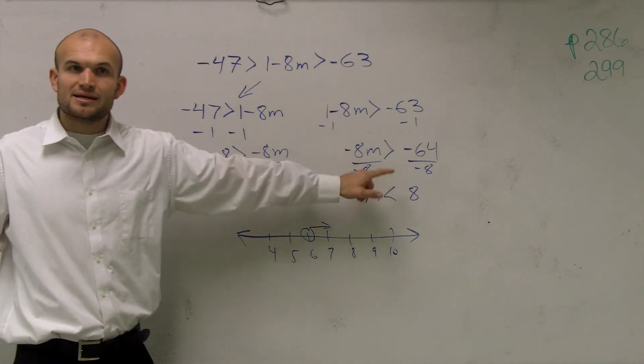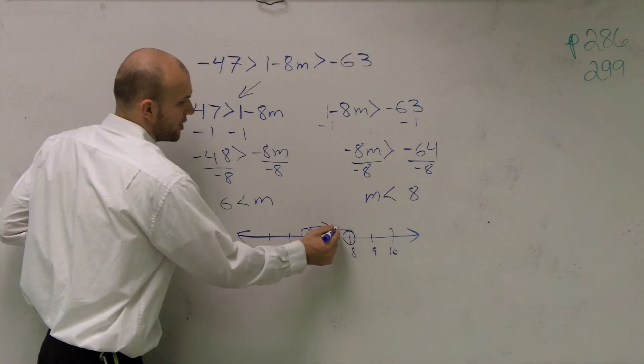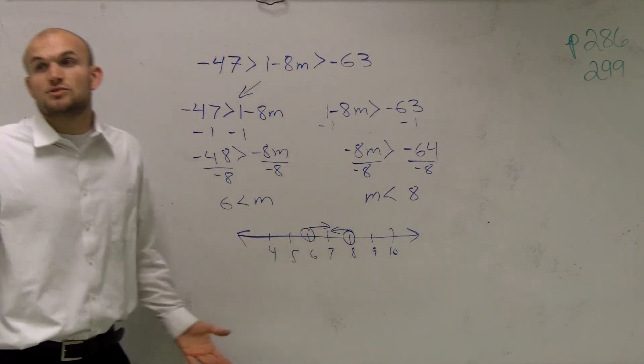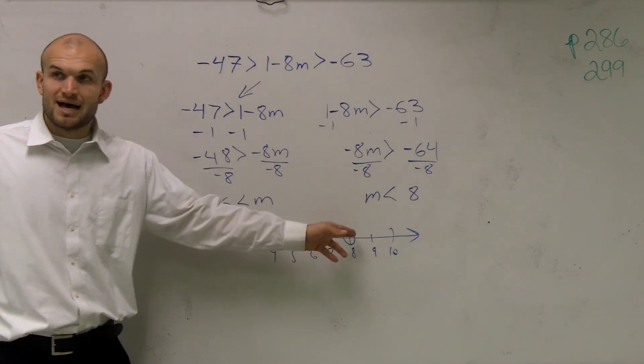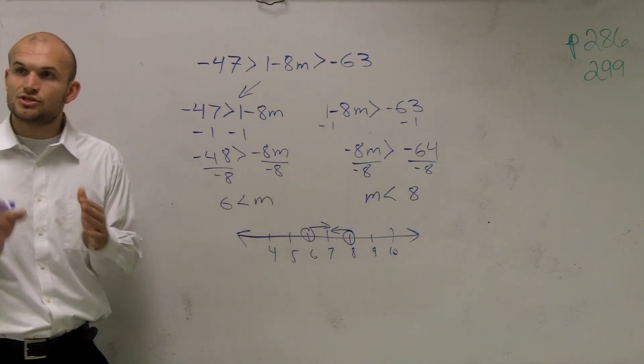Then I go to this one. It says m is all numbers less than 8. So I make a nice big circle at 8 and I say, oh, all numbers going that way. So then what I notice is, since I have a line going here and a line going there, I'm only going to graph where these two interlap.